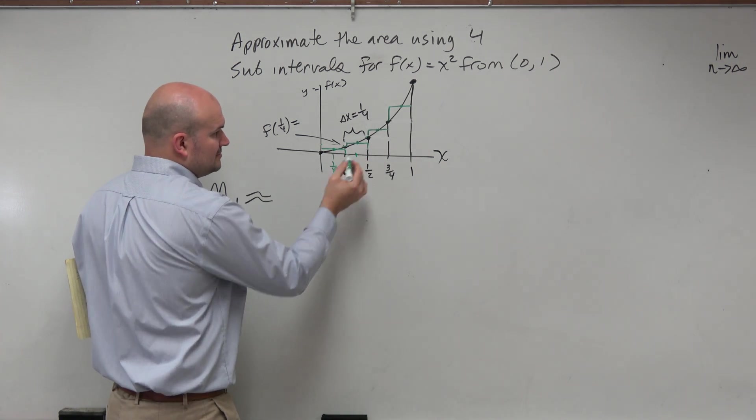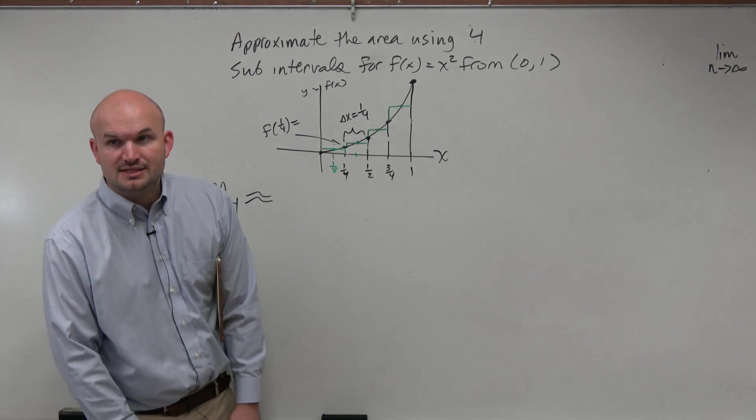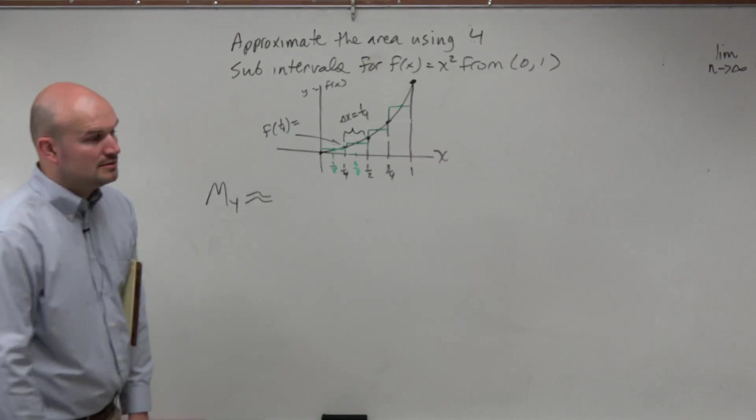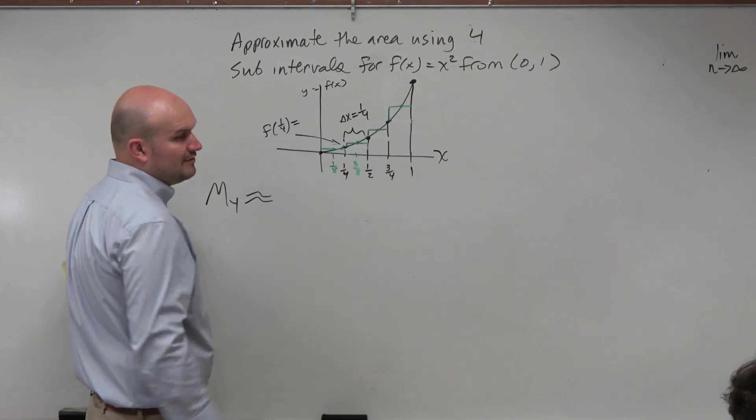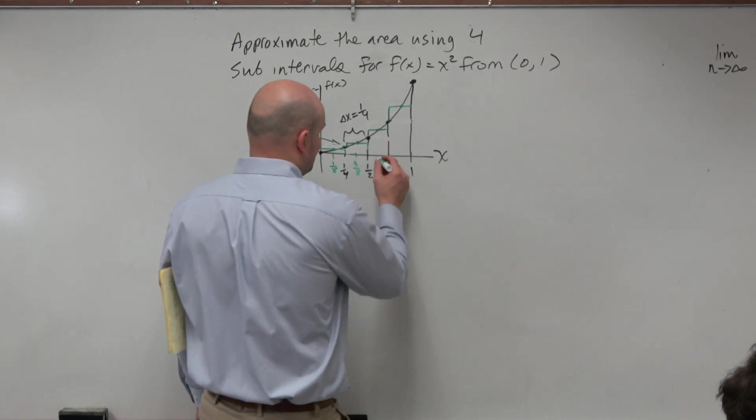And then what would this midpoint be? So if you add 1/4th, you're looking at 3/8ths. And then if you're adding another 1/4th, you're looking at 5/8ths.